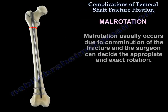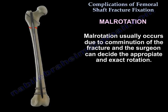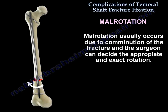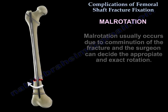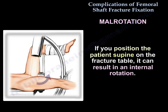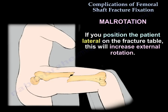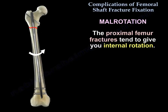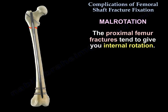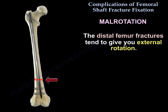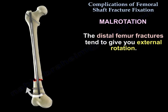Malrotation usually occurs due to comminution of the fracture, where the surgeon cannot determine the appropriate and exact rotation. If you position the patient supine on the fracture table, it may result in internal rotation; positioning the patient lateral will increase external rotation. Proximal femur fractures tend to produce internal rotation, while distal femur fractures tend to produce external rotation.